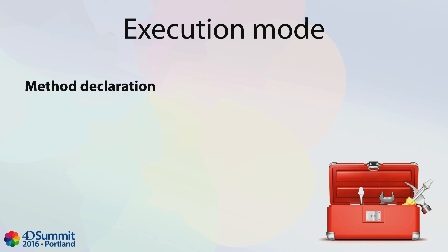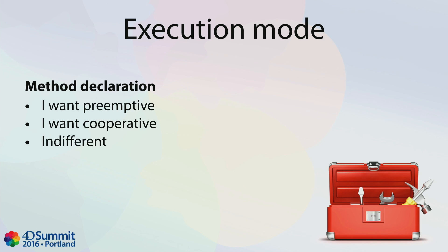You must also declare your project method for preemptive mode. You tell 4D: I want this project method to run in a preemptive 4D process. There's a new setting in the project method properties with three radio buttons: I want preemptive scheduling, I want cooperative scheduling, or I don't care. By default, all your methods use the 'I don't care' option — so if you are converting an old 4D database, all your methods start in 'I don't care' mode.